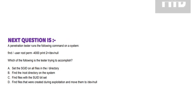Next question is: A penetration tester runs the following command on a system. Which of the following is the tester trying to accomplish? Option A: Set the SGID on all files in the directory. Option B: Find the root directory on the system. Option C: Find files with the SGID bit set. Option D: Find files that were created during exploitation and move them to /dev/null.